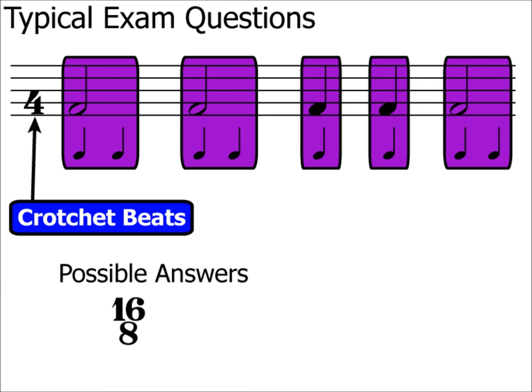To calculate the time signature of this example, let's start with counting in crotchets. This wouldn't work as we'd end up with 1.5 in each bar, and you can only have whole numbers at the top of a time signature. It can't be a minim beat as there isn't even one minim in each bar. But we can count in quavers — an eight at the bottom. Two quavers in a crotchet, and one more here, so there are three quavers in this bar. Let's check the second bar: there are also three quavers — don't forget to include that quaver rest. So the answer is 3/8.